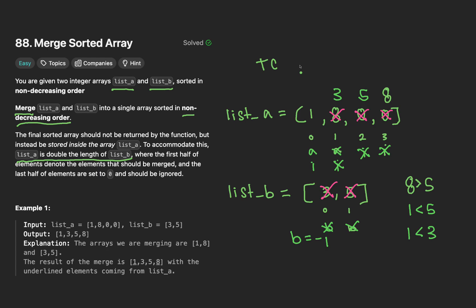The time complexity is big O n where n is the number of elements in list a and the space complexity remains constant space. Onto the code.